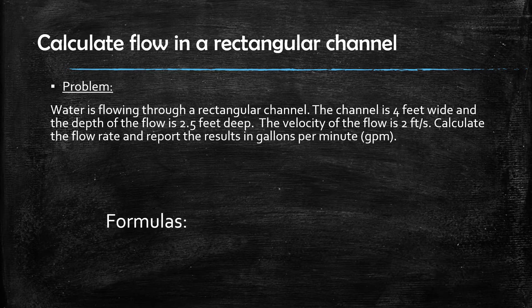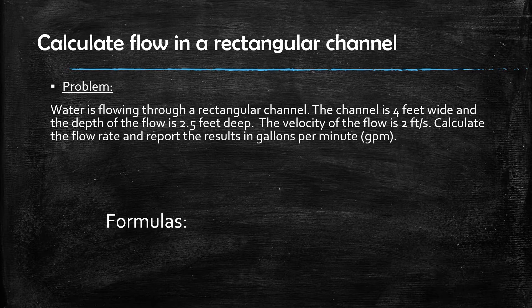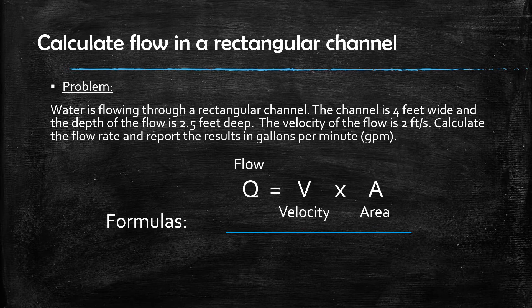All flow rate type problems like this one utilize the same formula for calculating flow rate. The formula is Q, which is the symbol for flow rate, is equal to the velocity of the flow multiplied by the cross sectional area of the channel shape. In this case, it's a rectangle.